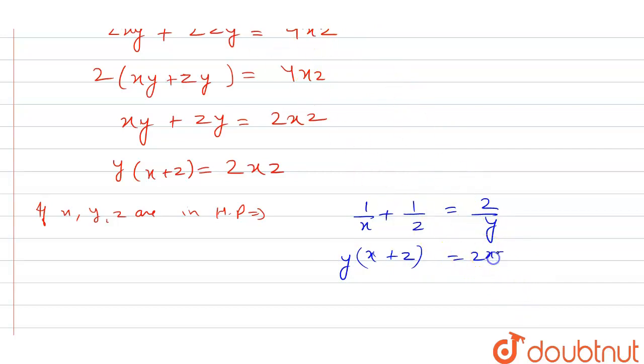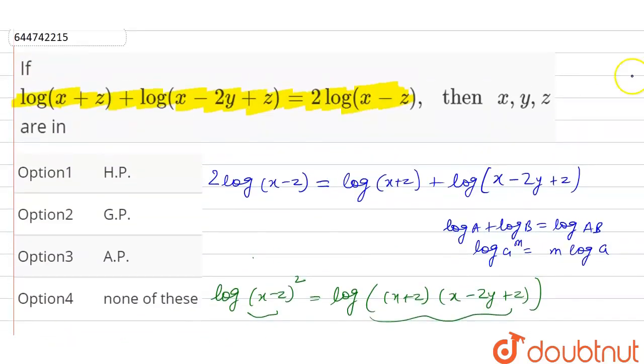So that's why hence proved that x, y, z are in harmonic progression HP. So we will check the option. Our option will be option 1, HP. Thank you.